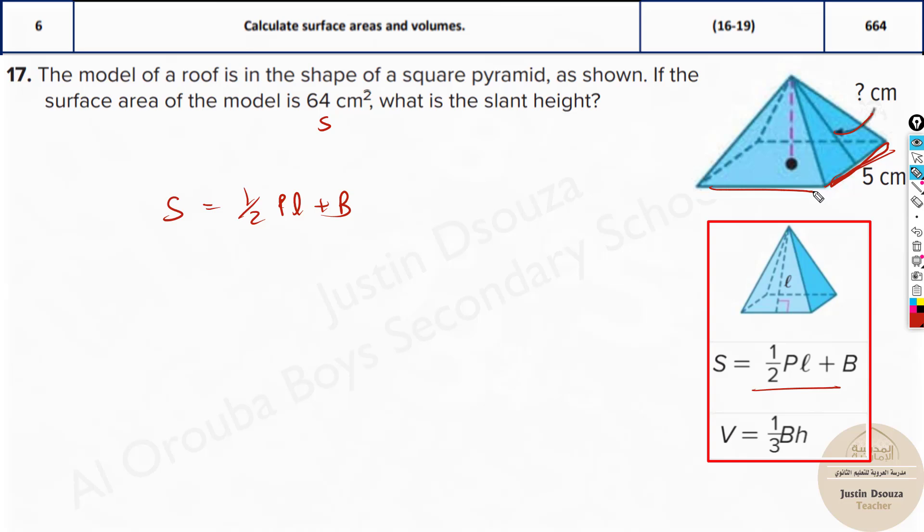If this side is 5, it is a square base so all sides are 5. The perimeter P will be 4 times 5, that is 20. We also need B. B is the area of the base. Area of the base is 5 squared, that is 25. We have all the required values. Only L is unknown.